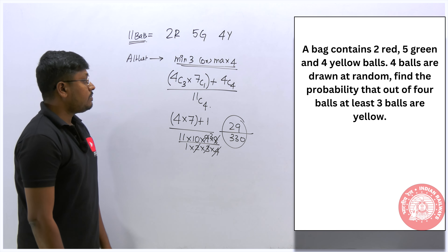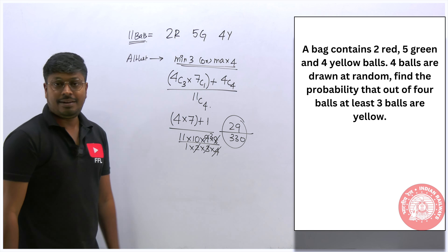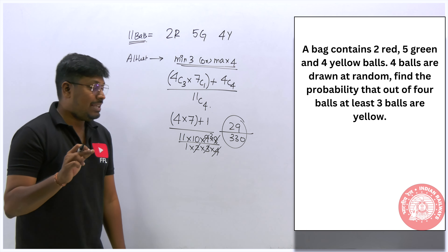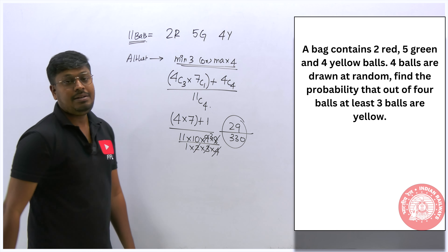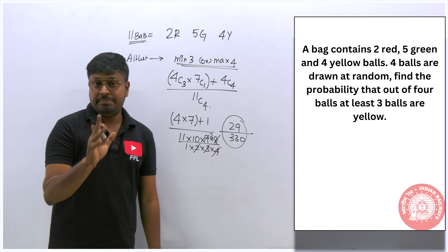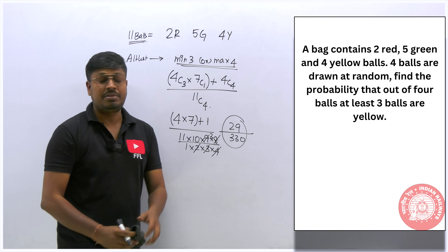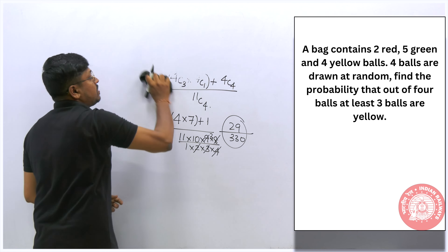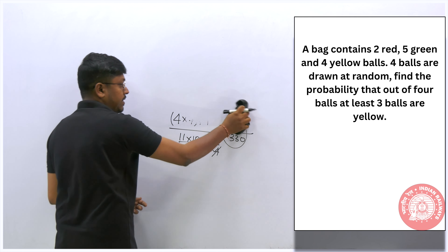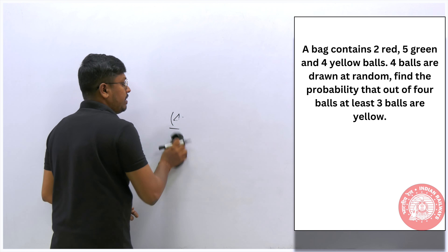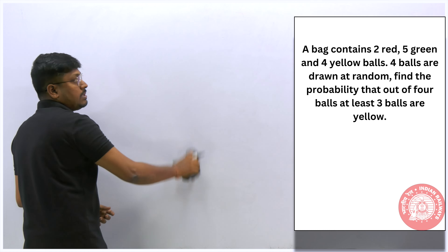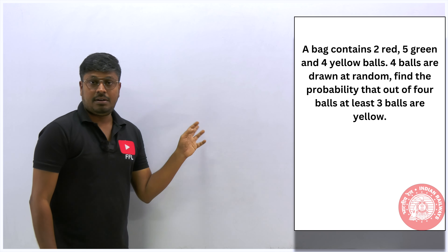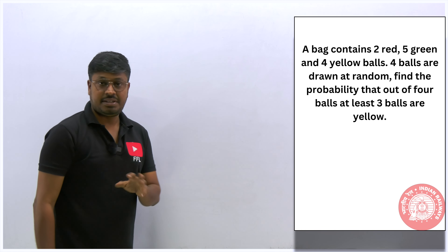So the answer for this probability question is 29/330. It's not a difficult question. In railway exams you won't find very difficult probability questions. Make sure to learn the basics of probability, especially solving questions on colored balls. According to me, and for many students, this is an easy topic.